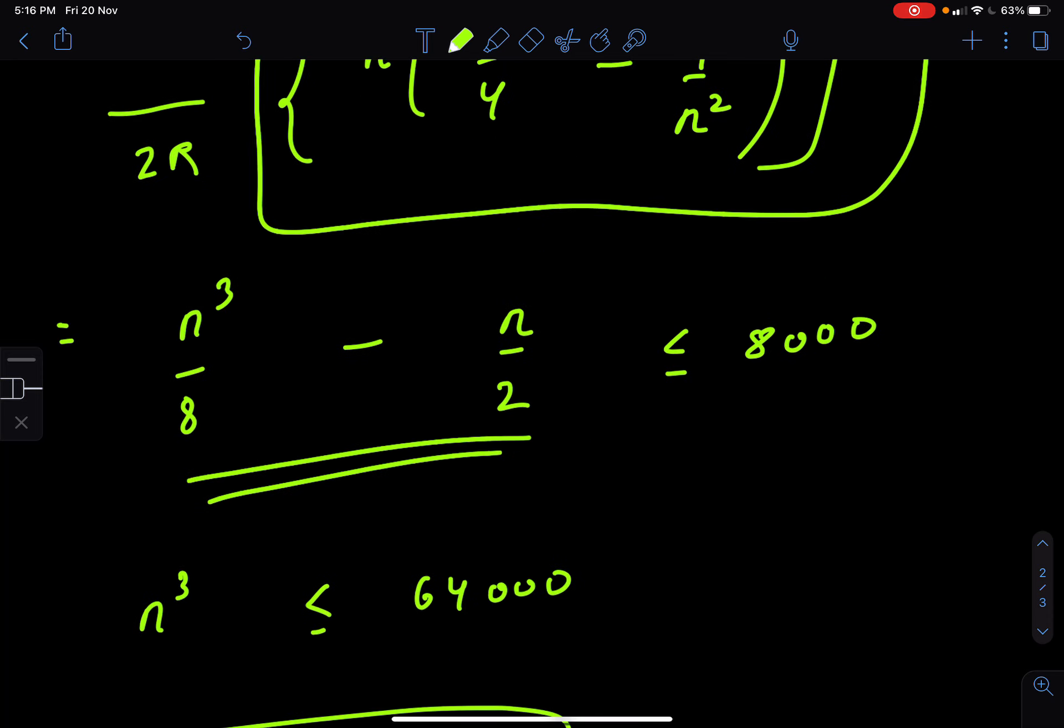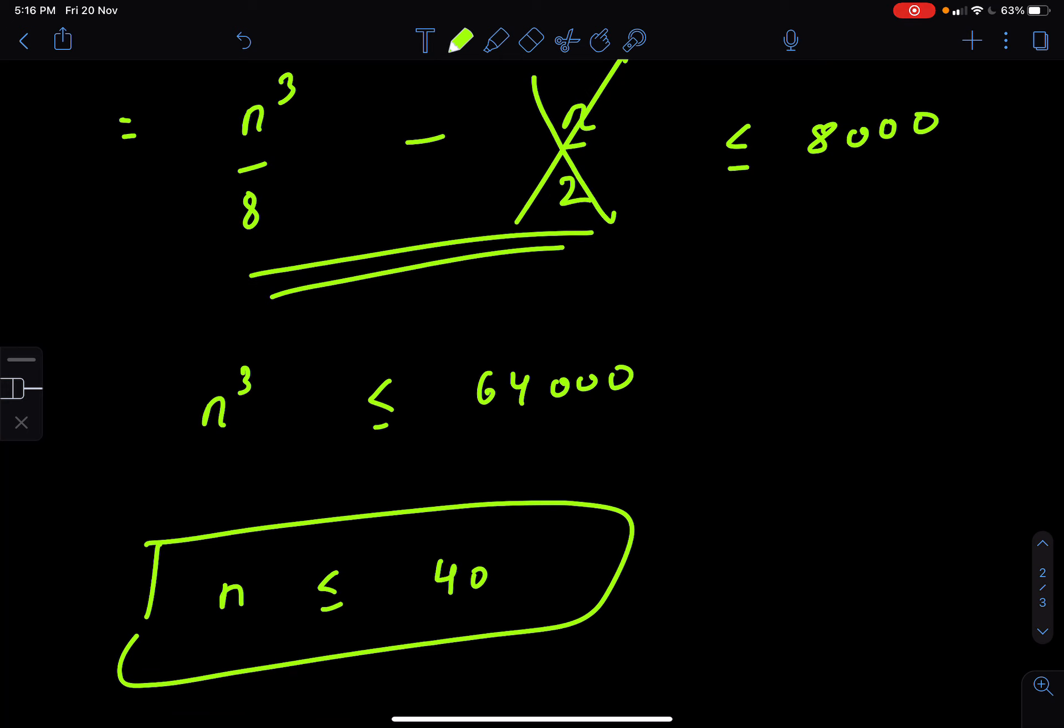Now, the thing is, this thing is happening at a very high value of n. So for very high value of n, n cubed term will be dominating over the linear term. So we can ignore this. So n cubed should be less than 64,000 or n should be less than equal to 40.